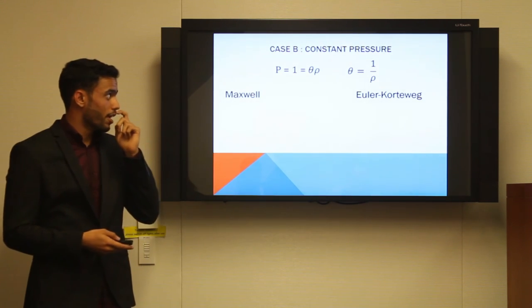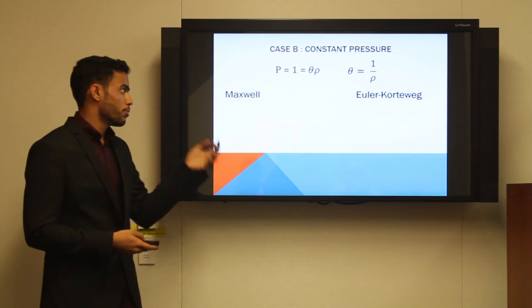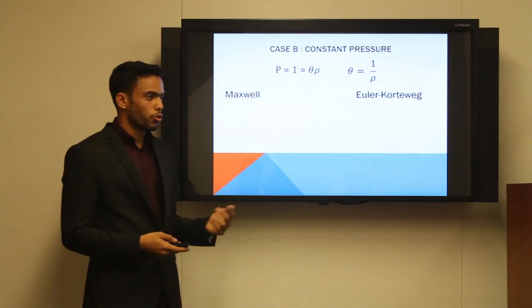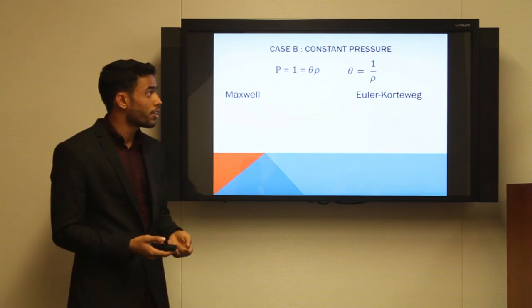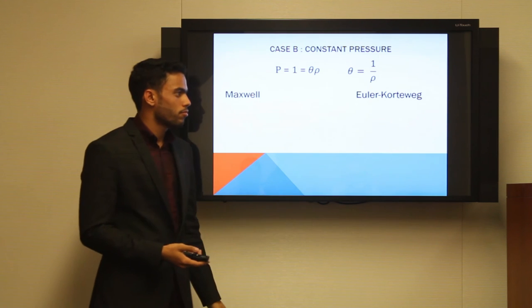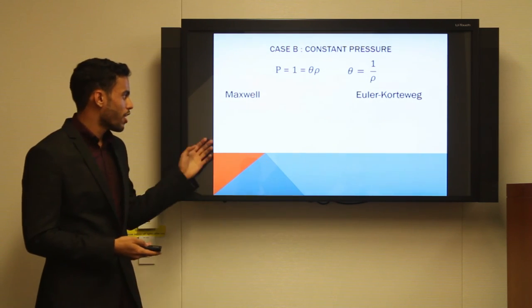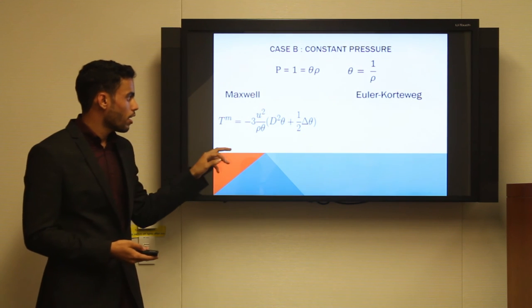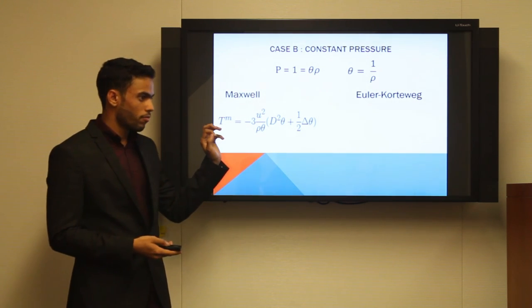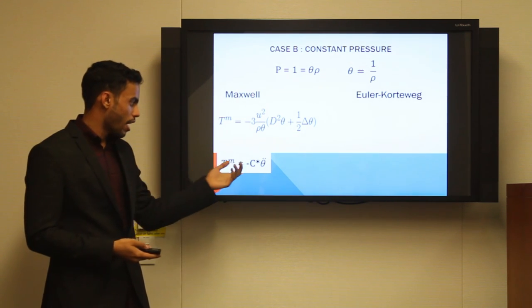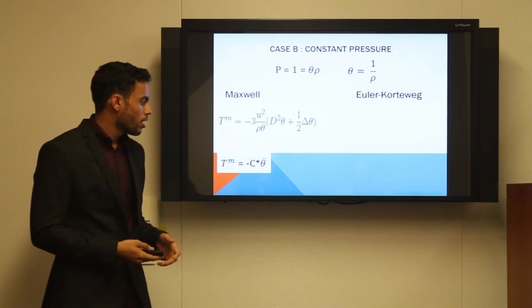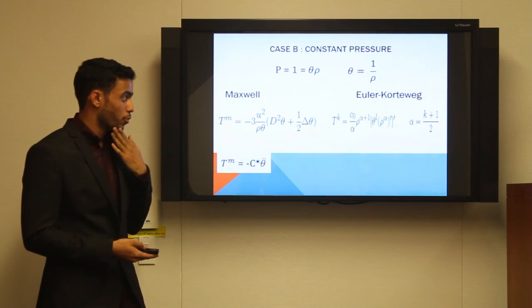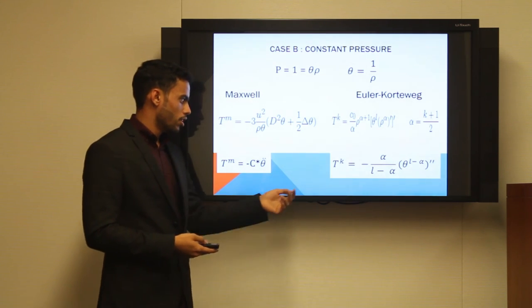For the other case in which now the pressure is constant, since we know that pressure is nothing but the multiplication of temperature and density, and if it's constant then we could scale it up at whatever value we want. The simplest would be one. Then we have the temperature to be simply one over rho. For Maxwell model, since this is the form of TM, the extra term of the total stress, it could be easily manipulated for the 1D case to eventually be equal to a constant multiplied by the second derivative of temperature.